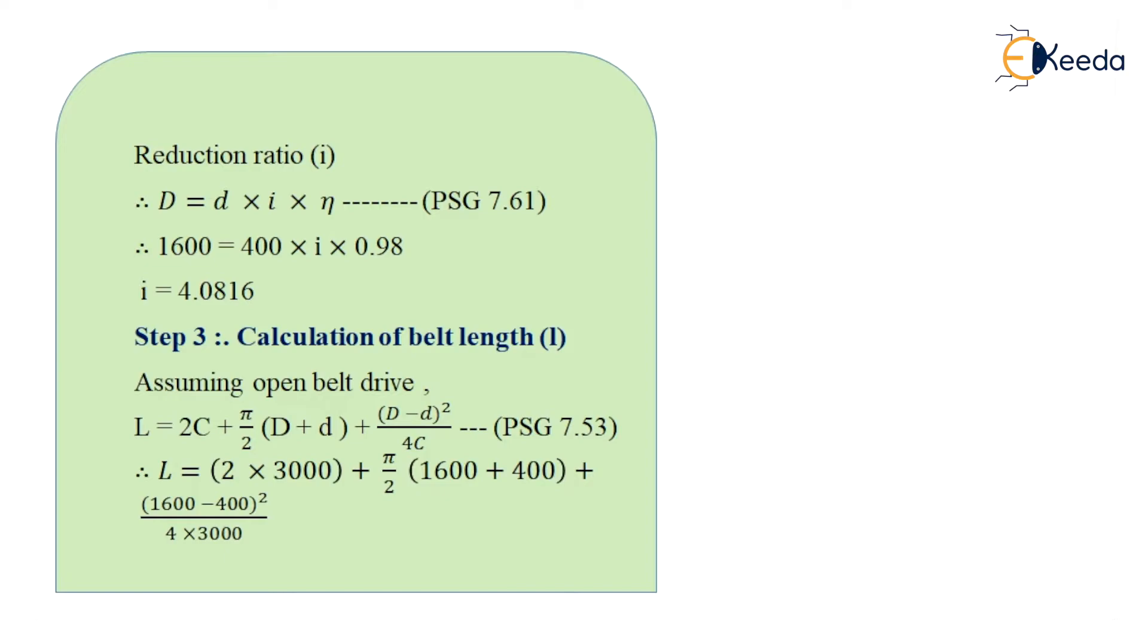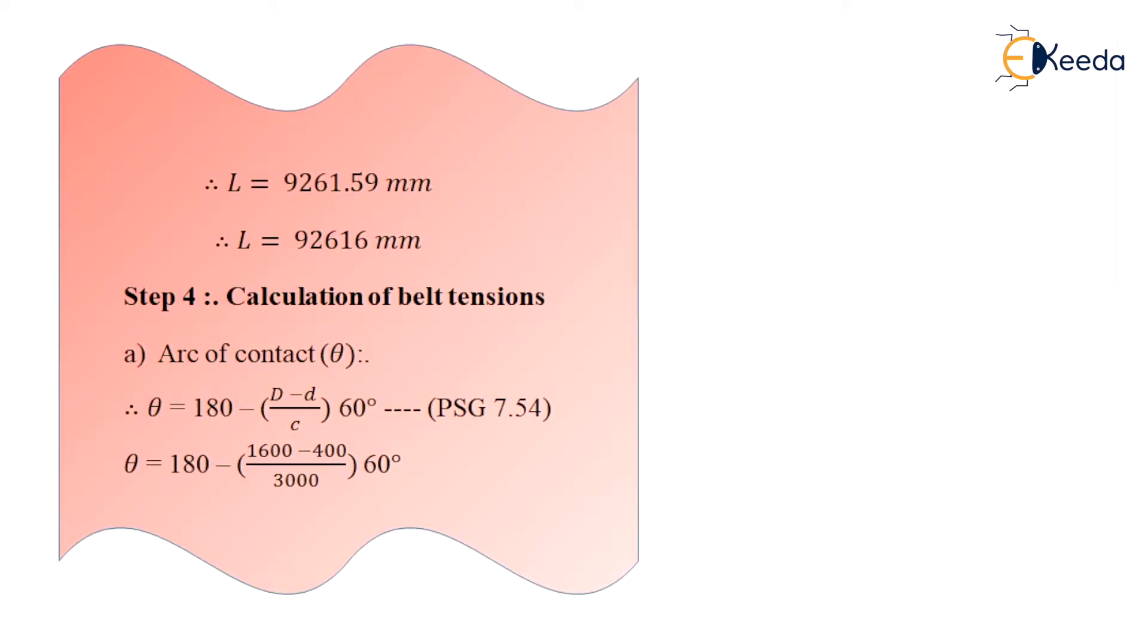Next step is to calculate the length of the belt. We know the formula for length of the open belt as L is equal to 2C plus π by 2 into (D plus d) plus (capital D minus small d) squared divided by 4C. After substituting the values in the above formula, I get the value of length of the open belt as 9261.59 mm, that is 9261.6 mm.